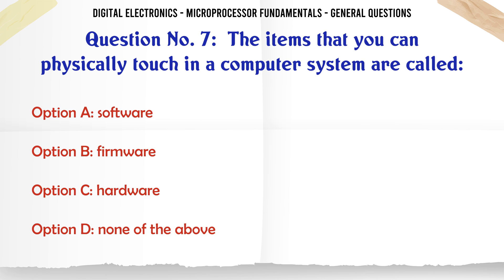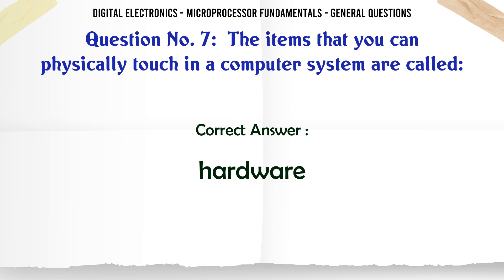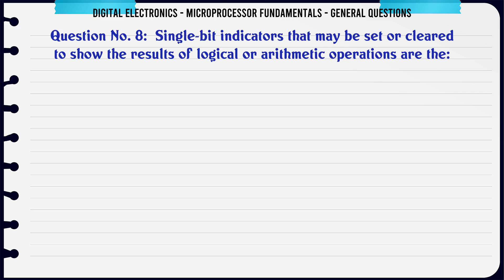The items that you can physically touch in a computer system are called: A. Software, B. Firmware, C. Hardware, D. None of the above. The correct answer is Hardware.